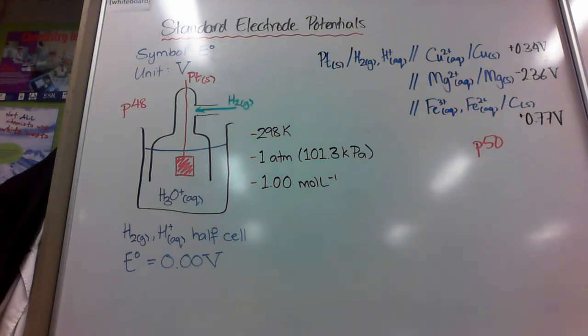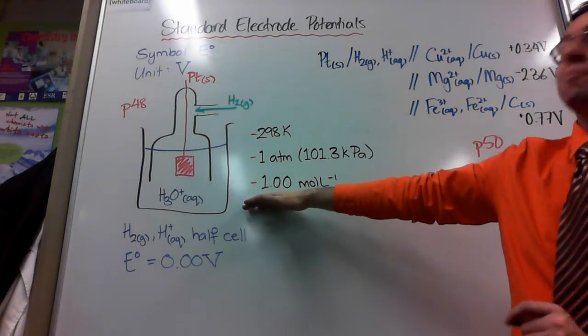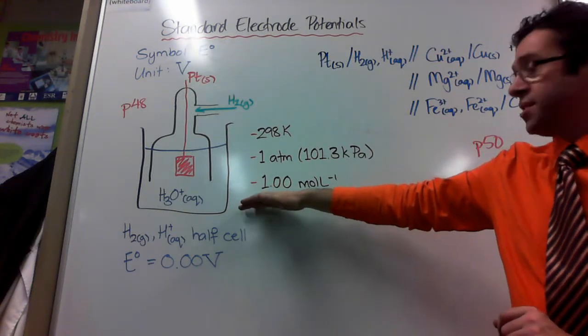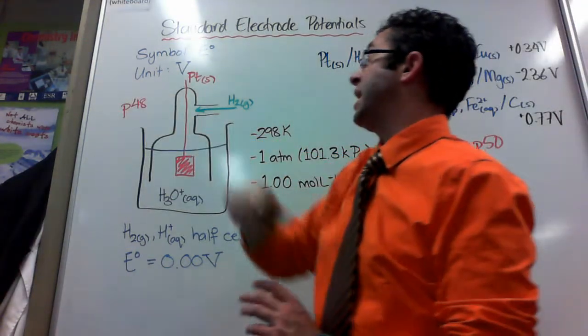The data I've got there is all from page 50 in your books. So if you want to see some typical values, you'll see that there. If you want to see a more tidy diagram of the standard half cell, which is the hydrogen one, that's on page 48.